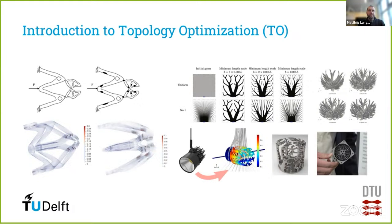Thank you, Mohamed. Now we switch gears to topology optimization. The review paper not only contains a lot about additive manufacturing, but also a very nice introduction and overview of topology optimization, from which I've taken some figures here. If you are looking for a good, up-to-date overview of this field, it is definitely worth checking out the paper for that section.